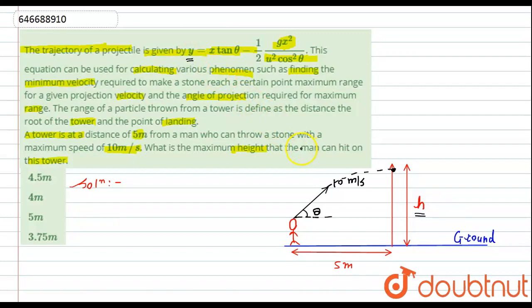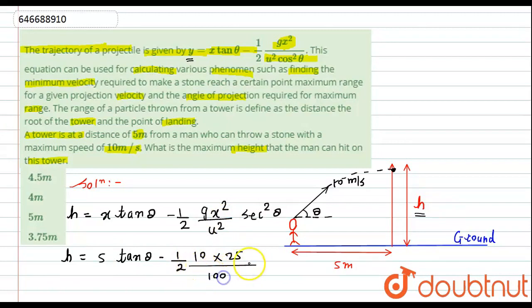In the place of y we will write h. This will be equals to x tan theta minus 1/2 of gx² divided by u². And 1 upon cos² theta can be written as sec² theta. After putting the values, this will become h equals to x is 5 into tan theta minus 1/2 of g is 10, x means 5² will be 25 divided by 10² will be 100 multiplied by sec² theta.